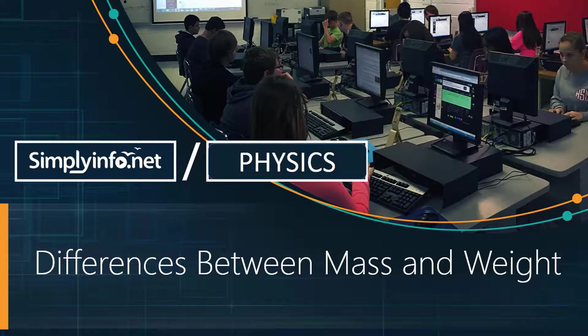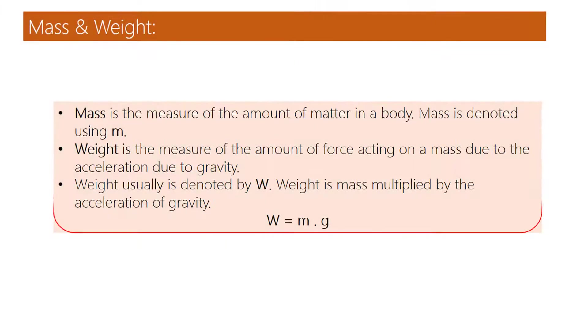Difference between mass and weight. Mass is the measure of the amount of matter in a body. Mass is denoted using M. Weight is the measurement of the amount of force acting on a mass due to the acceleration due to gravity.